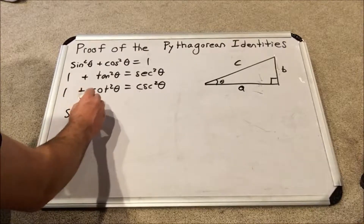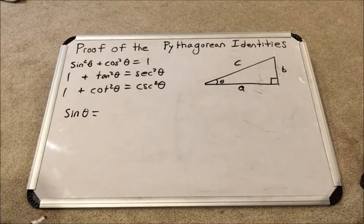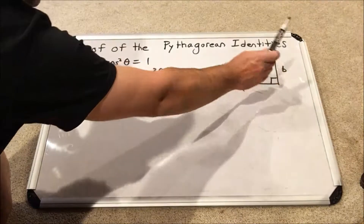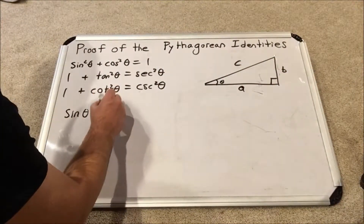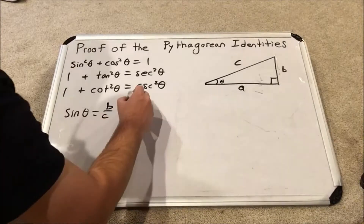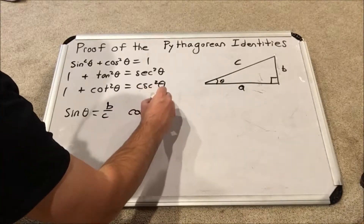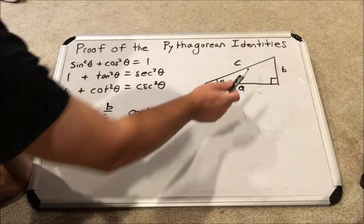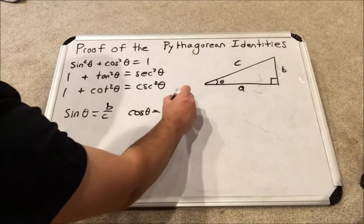Sine theta, when it comes to this triangle, would be opposite over hypotenuse, so b over c. Similarly, cosine theta, which is the other term in the expression, is equal to adjacent over hypotenuse, so a over c.